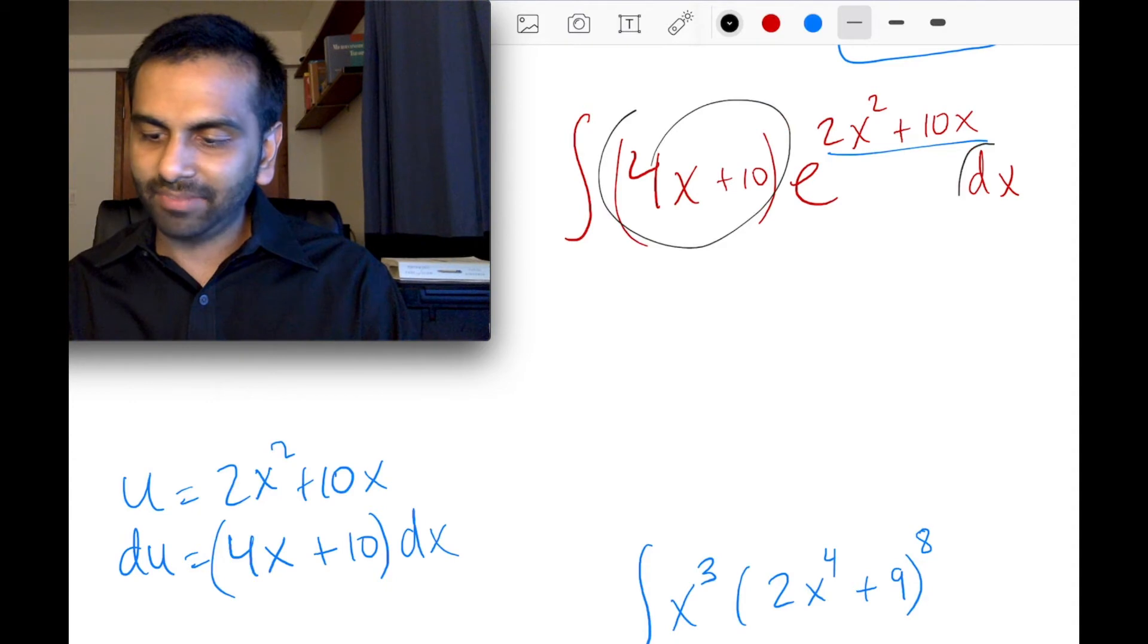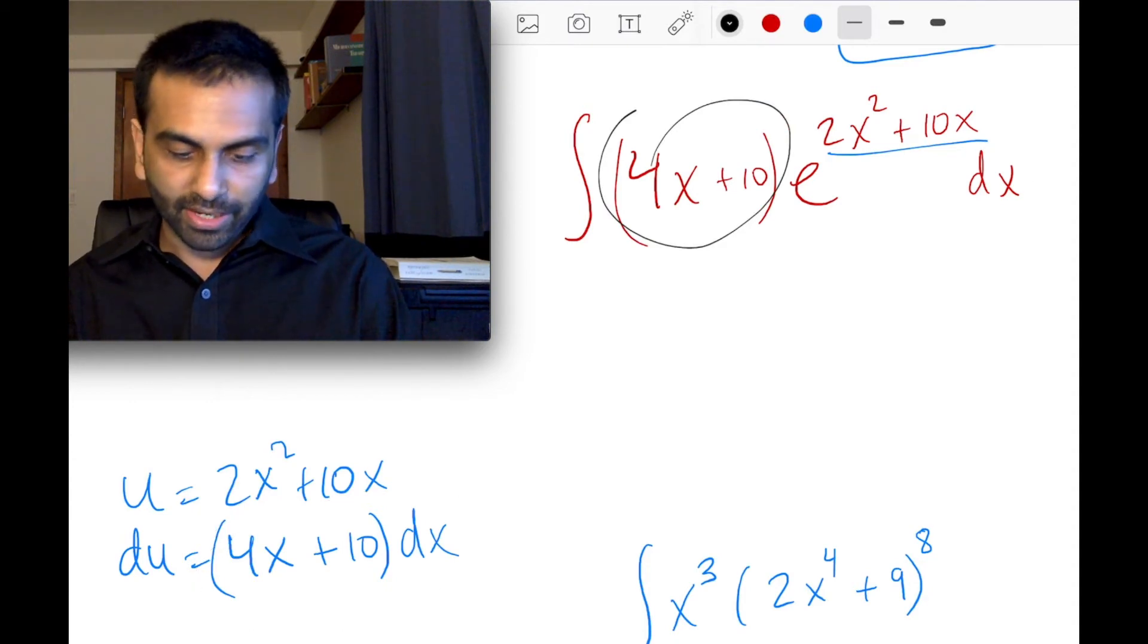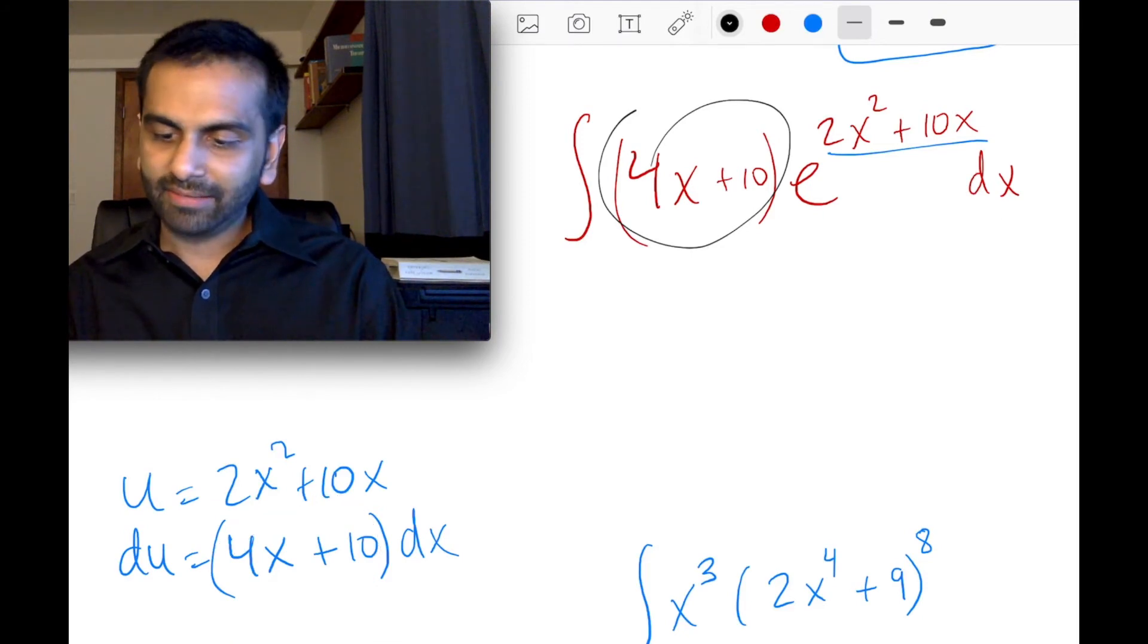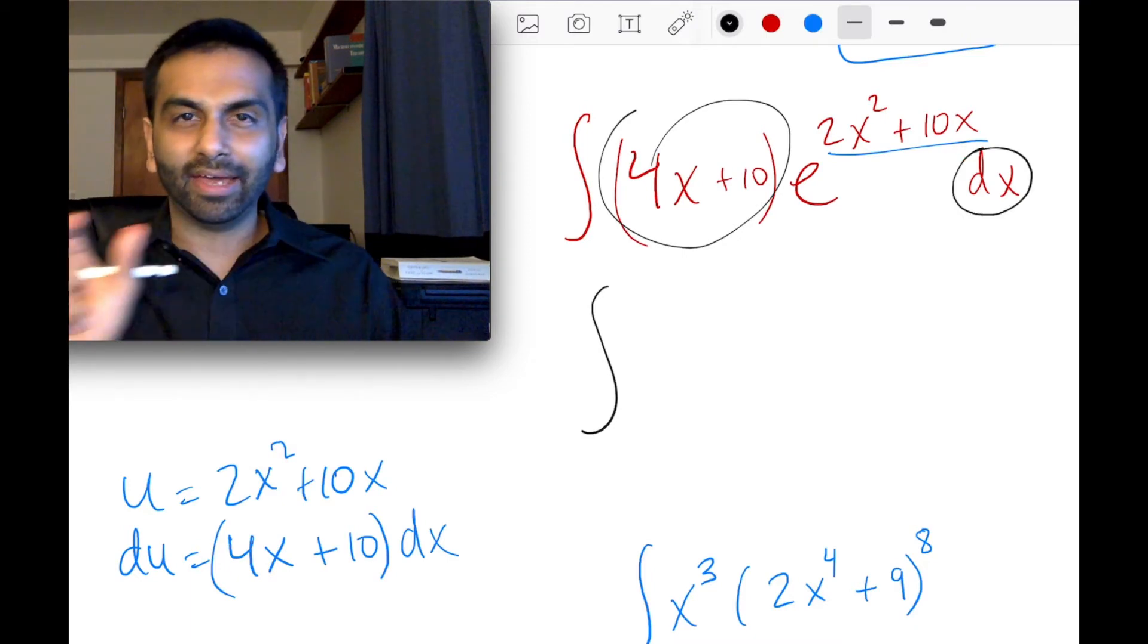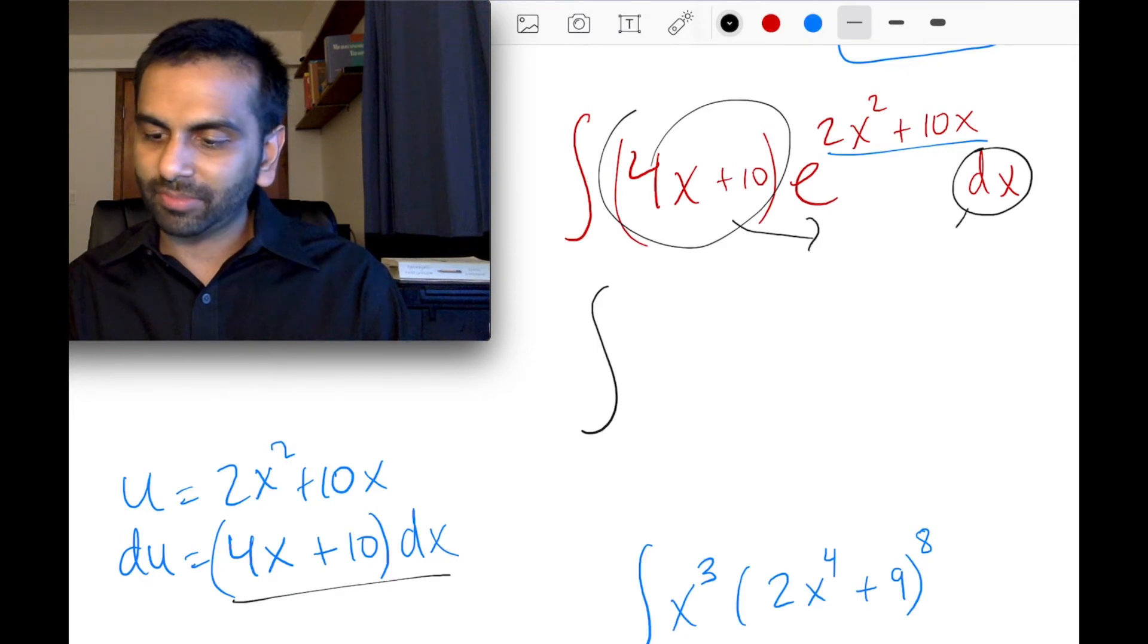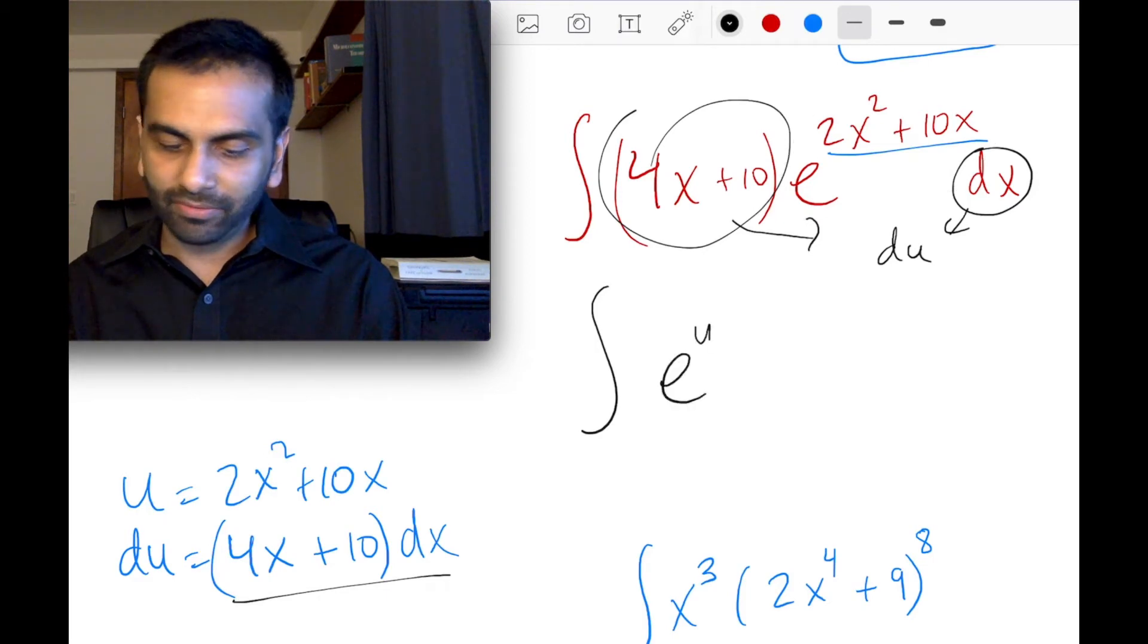Now, the 4x plus 10 times dx, like this times this, is my du. So, you know, again, you could divide both sides by 4x plus 10, plug that in for dx, have them cancel out. But in other case, you could also just recognize that 4x plus 10 times dx, that product is du. So these two get substituted out with just du. And what's left here, e to the power of that thing, is just e to the power of u, because u was that exponent.